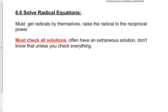Today we're solving radical equations in section 6.6. The key here is that you must get radicals by themselves. Then you're going to raise your radical to the reciprocal power — that's how you're going to get rid of that particular power. The other key for today is that you must always check all of your solutions. There are going to be situations where you will have an extraneous answer, and you're not going to know that until you check all of your answers back into the original question. That is part of the whole process.